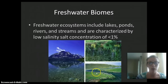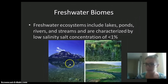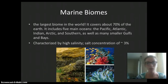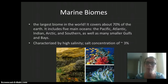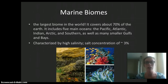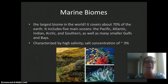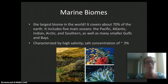So again, rivers, ponds, and lakes. Marine biomes are going to be our largest biome in the world, covering about 70% of our earth and including the five oceans: the Pacific, Atlantic, Indian, Arctic, and Southern oceans, as well as many other smaller gulfs and bays. Marine biomes are characterized by higher salinity.